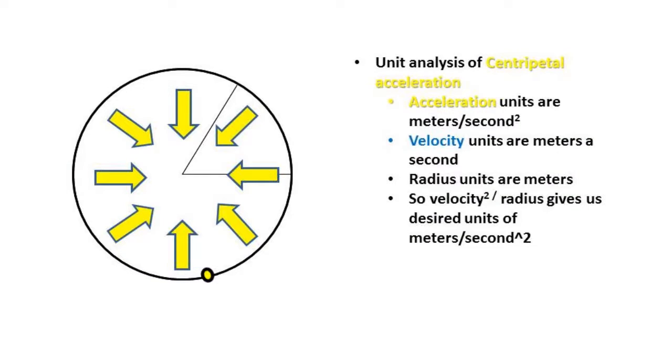To further cement the centripetal acceleration equation in our minds, let's do unit analysis to find the first equation. The units for acceleration are meters per second per second. The units for tangential speed or velocity are meters a second. And the units for radius are in meters. So if we were to square the velocity and divide by the radius, we will end up with our desired units of meters per second per second.